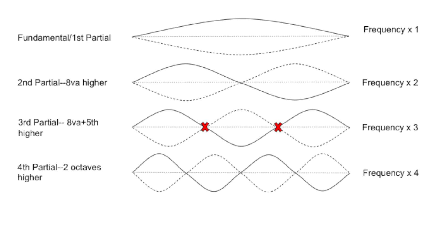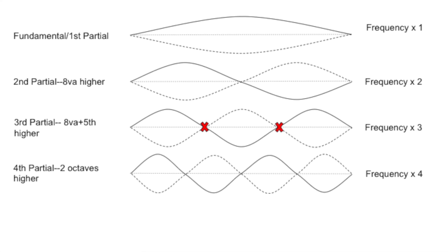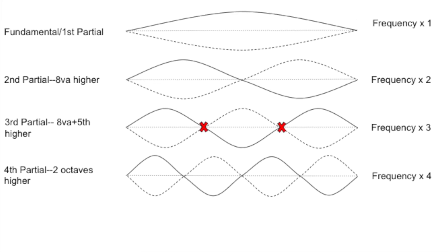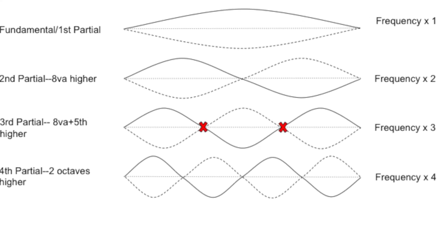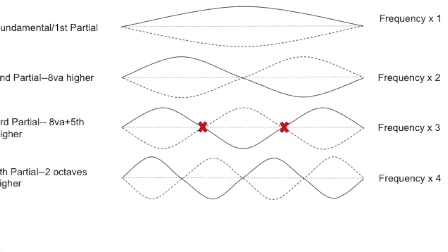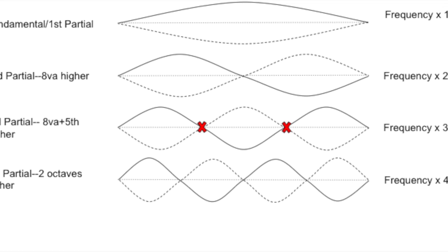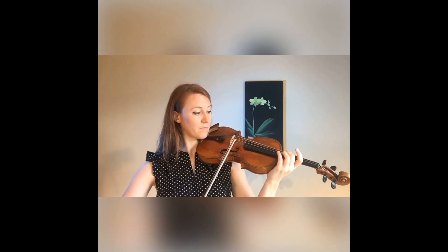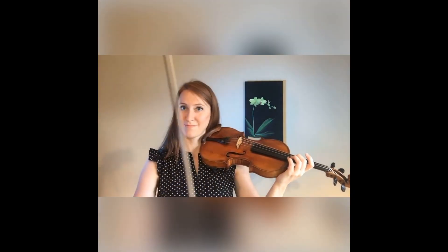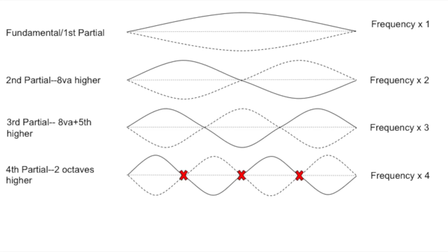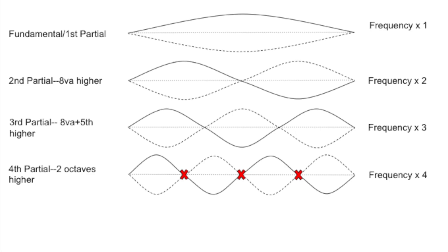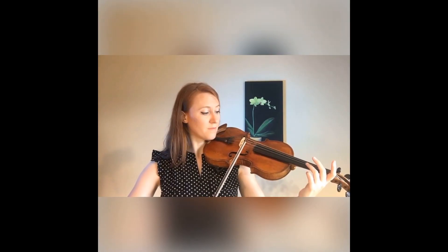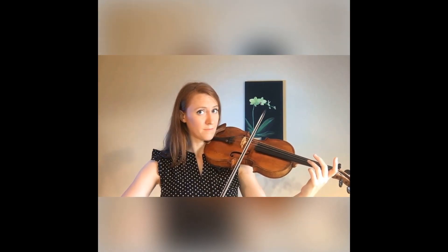Now with the third partial, your string is vibrating in thirds, and again you have a node at a third of the way up the string. There's your third partial. Same thing with the fourth partial — the string is vibrating in fourths. And there's your fourth partial.